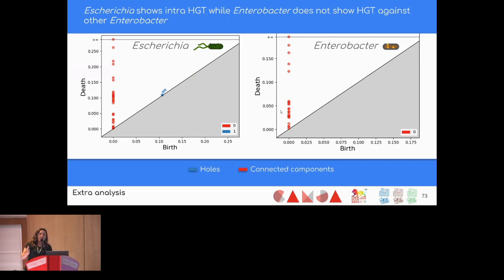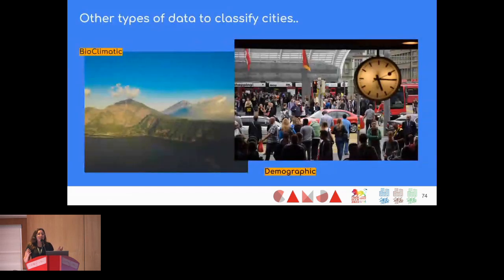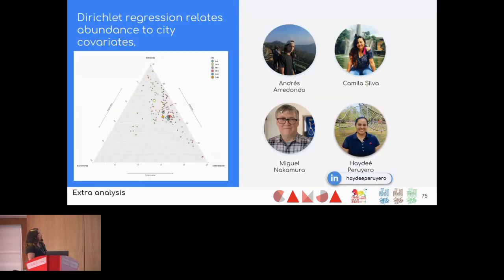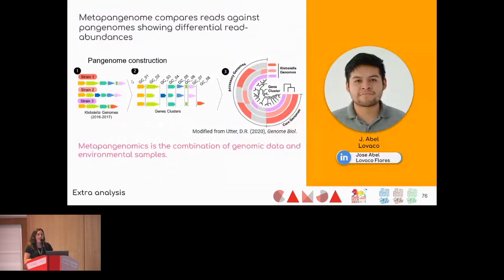Another extra analysis was correlating taxonomy or diversity with other parameters such as bioclimatic and demographic characteristics of each city. We used a heritage-led regression model and found that for Denver, there appears to be a correlation between OTU abundances and demographic and bioclimatic variables.